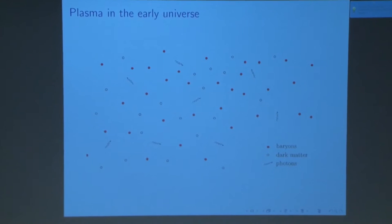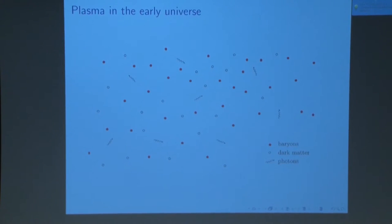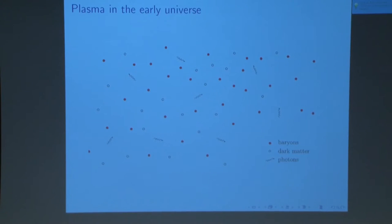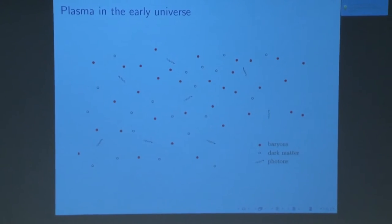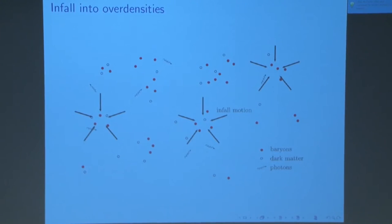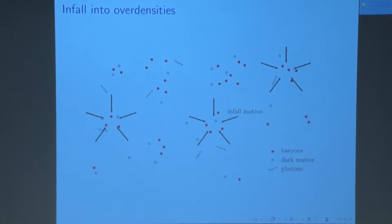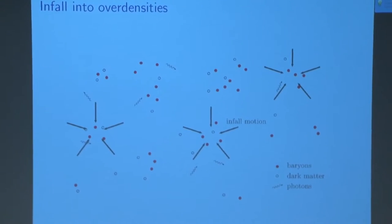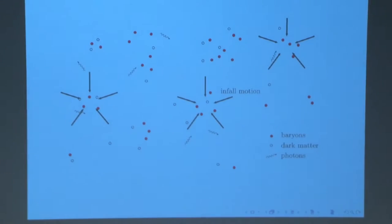To answer that question, we go back to just after the Big Bang. In the early universe there was a plasma — it had baryons, it had dark matter, and it had photons, all scattered fairly randomly around the universe. If we step forward in time a little bit, gravity is the main force acting on it, so we get an infall of matter. The baryons group together, the dark matter also groups together, and we get these over-densities forming. An over-density is just an area that is more dense than the general background universe.